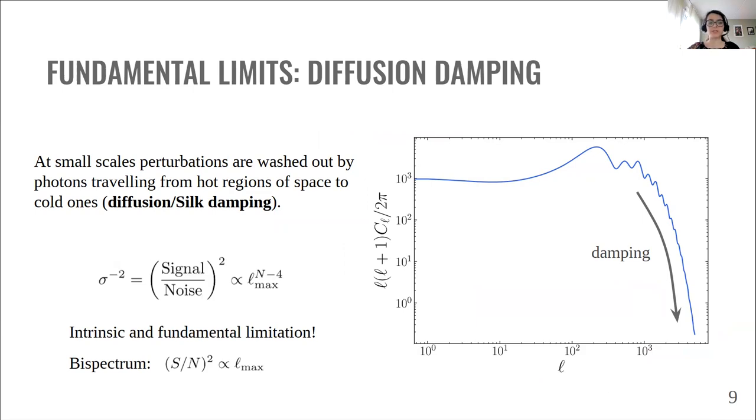Here, we immediately notice the presence of N, which is the order of the correlation function. This formula tells us that there is a fundamental and intrinsic limitation for correlation functions with N larger than 4. We cannot distinguish signal from noise anymore. And even if we consider the bispectrum, which has N equals to 3, the scaling of the signal to noise is well below mode counting. So not very promising.